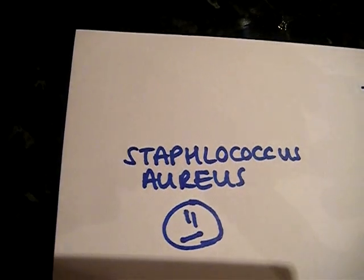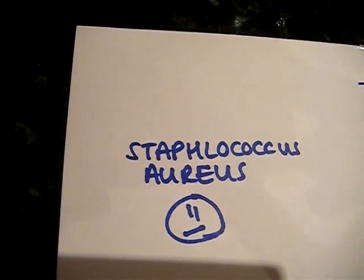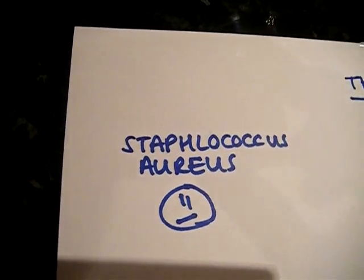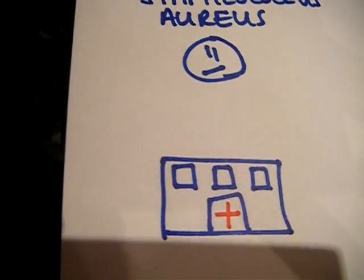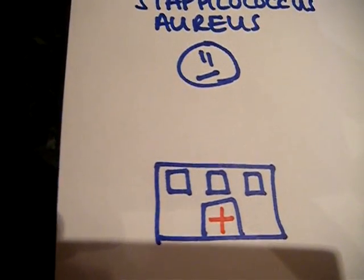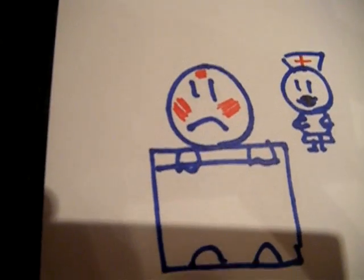So once upon a time there was a bacteria called Staphylococcus aureus, so we'll just call it Staph for short. And Staph found its way into hospitals across the UK, and as a result it made loads of people ill.